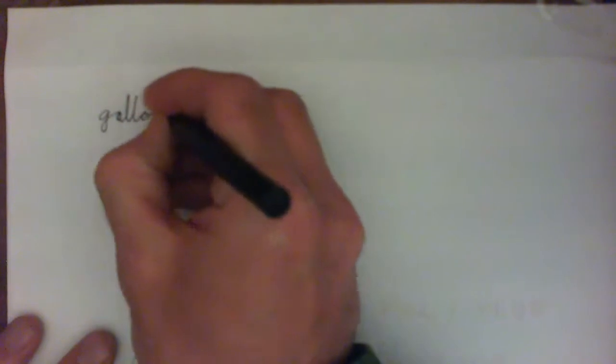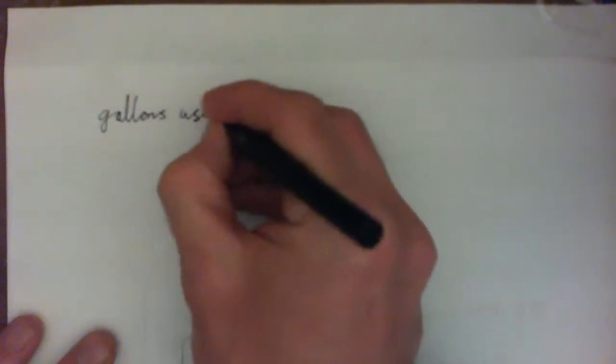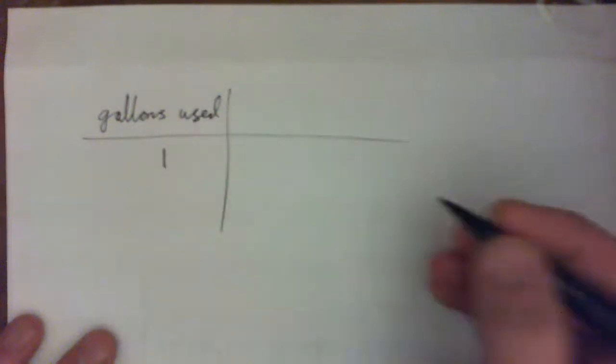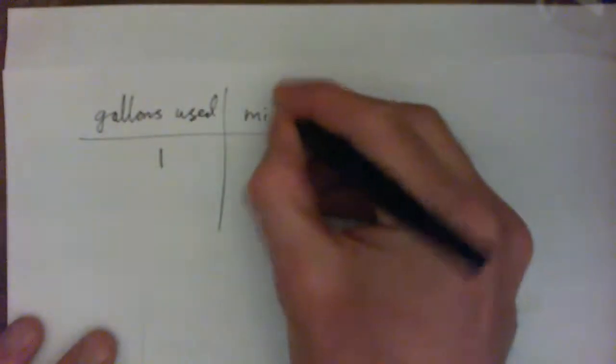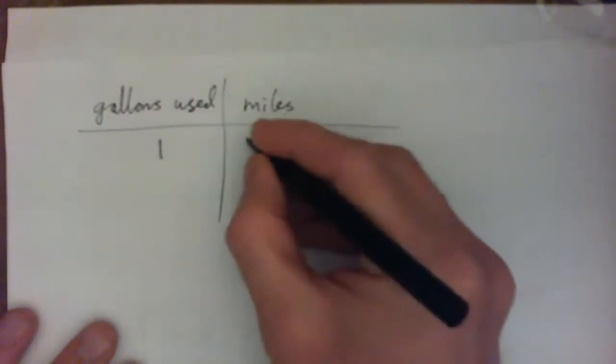All right, so what we could do is say - in other words, look, I'm just gonna look at this. Gallons used, let's say, just to make it easier. So if I use one gallon, it's the number of miles I can drive. If I use one gallon I could drive 25 miles. Make sense?